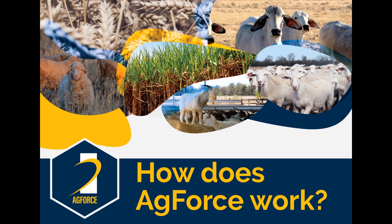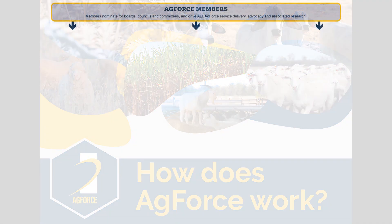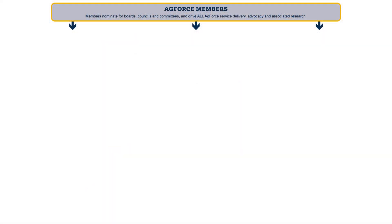AgForce Queensland is a peak organisation representing Queensland's broadacre agriculture — people who produce cattle, sheep, wool and goats, grain and cane. This short video explains how AgForce is put together. First, the members: over six and a half thousand members in Queensland. Members direct all of AgForce's advocacy, policy, services and research.